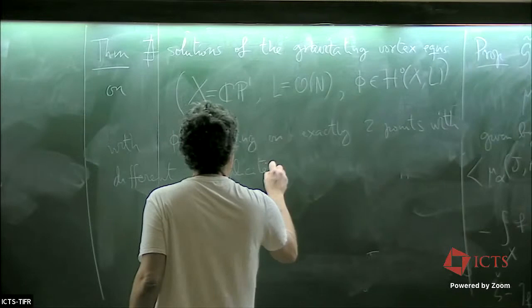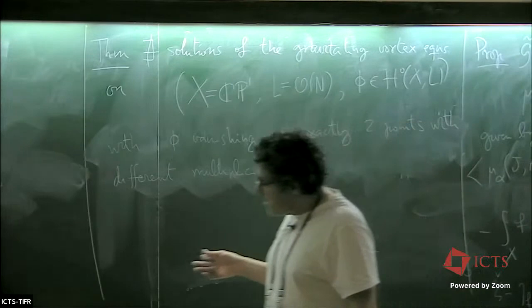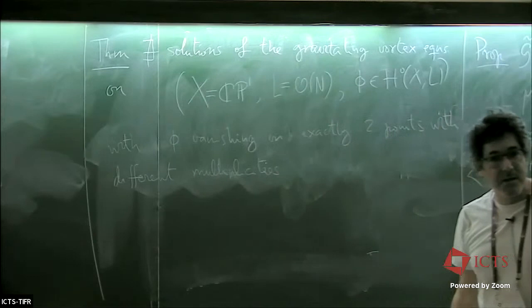And gravitating vortex equations on P1—this line bundle O(n), O(n) is any positive integer—with, for instance, I mean, they're all vanishing on exactly two points. And this answers some conjectures of Yisong Yang. Two points with different multiplicities. To prove this, you find—you compute explicitly for some choice of B—the Futaki invariant. And find that F is non-zero. Unless they have the same multiplicities. This is, I think, the time to stop. Thank you.